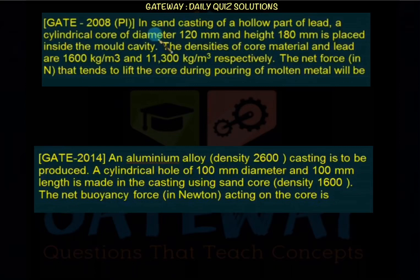Comparing with previous GATE questions: GATE 2008 asked for the net force tending to lift a cylindrical core (120 mm dia, 180 mm height) in lead casting with core density 1600 kg/m³ and lead density 11300 kg/m³. GATE 2014 asked for net buoyancy on a sand core (100 mm dia, 100 mm length) in aluminium alloy casting (2600 kg/m³) with sand core density 1600 kg/m³. Both required calculating buoyancy force on the core element.